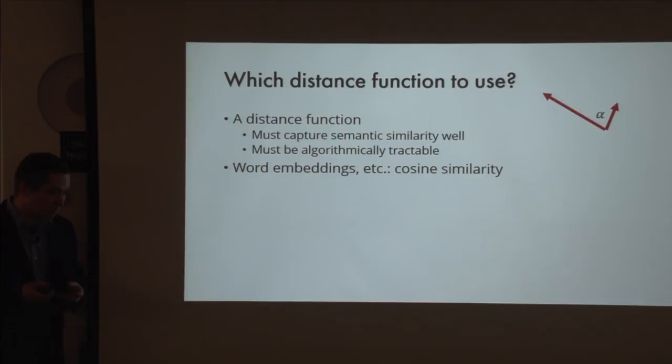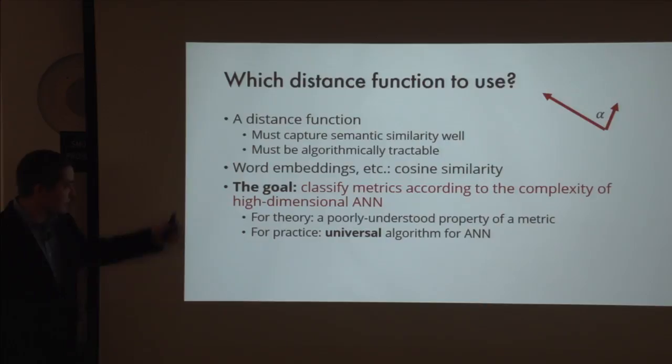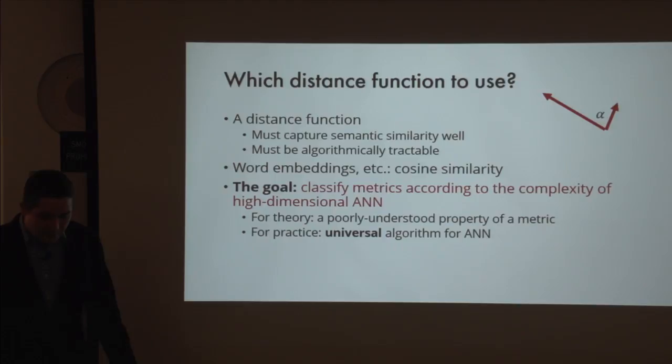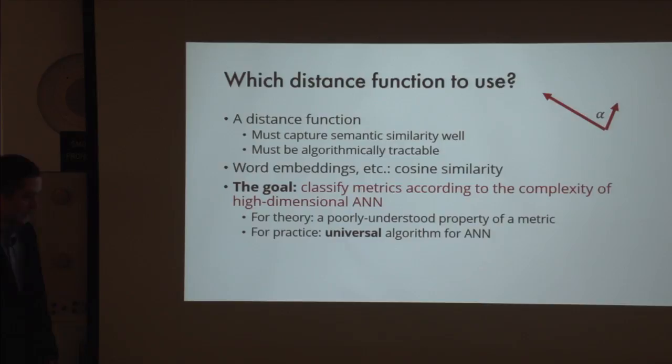This motivates the broad question: how to classify metrics according to the complexity of doing approximate nearest neighbor search with respect to them. From a theoretical point of view, we ask about something we poorly understand—what makes metrics easy or hard for nearest neighbor search. From a practical point of view, it would be great to have a universal nearest neighbor search algorithm where you just plug in your distance and it works, without tailoring it to the specific distance.